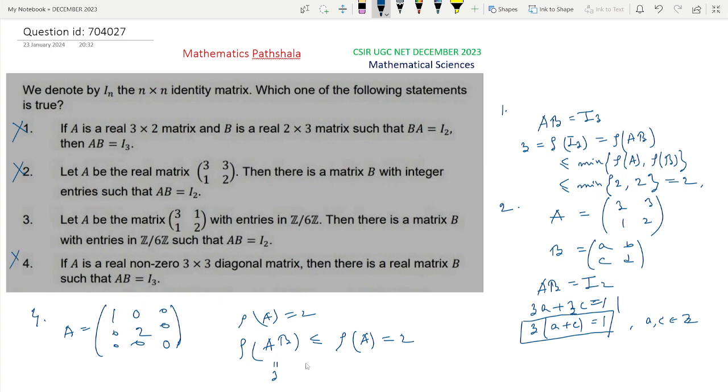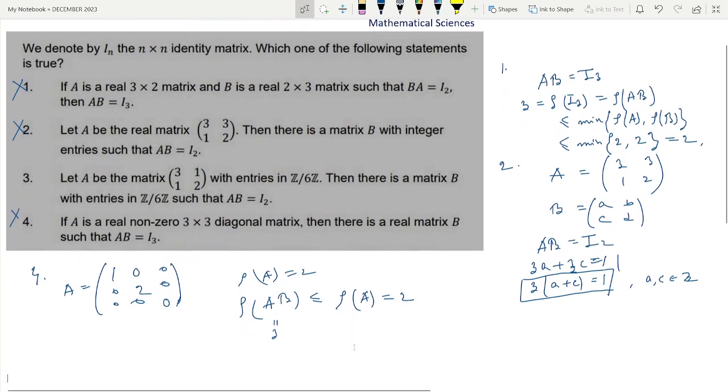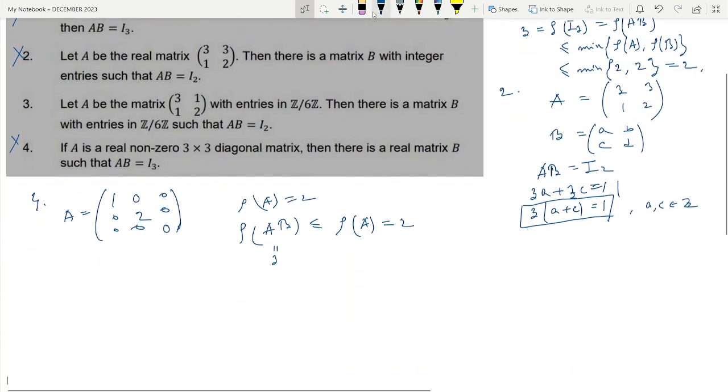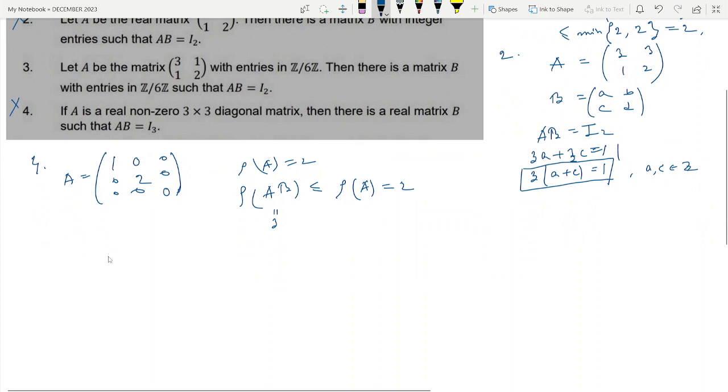So option 3 will be the correct option, and to prove this: A is the 2 by 2 matrix [3, 1; 1, 2] in Z6. Actually Z/6Z is isomorphic to Z6, we all know that. Then given that there is a matrix B with entries in Z6 also such that AB equals I2.